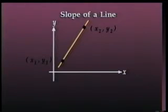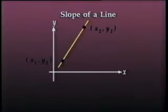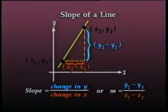Consider a non-vertical line passing through the points x1, y1, and x2, y2. The slope is given by the change in y values divided by the change in x values. That's y2 minus y1, divided by x2 minus x1. The letter m is often used to denote slope.